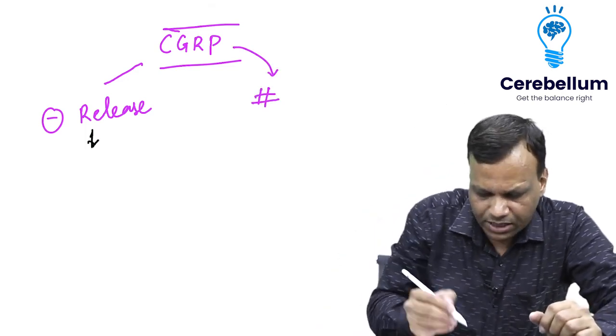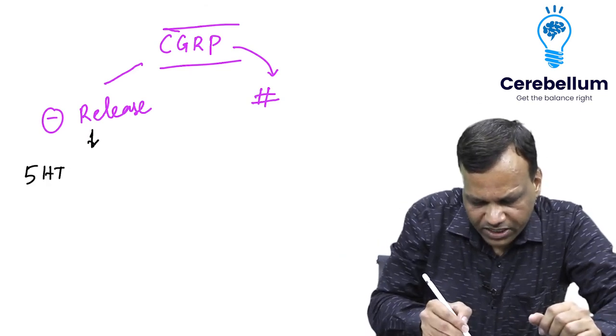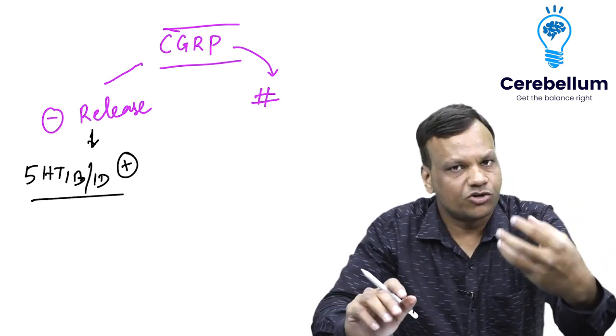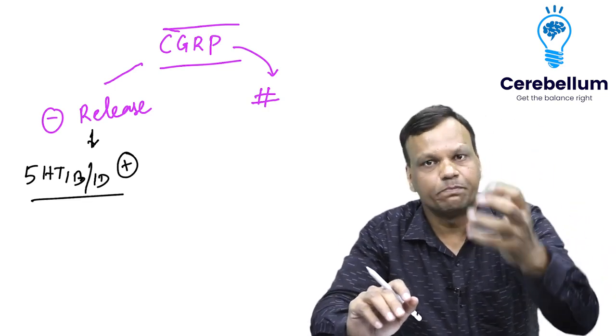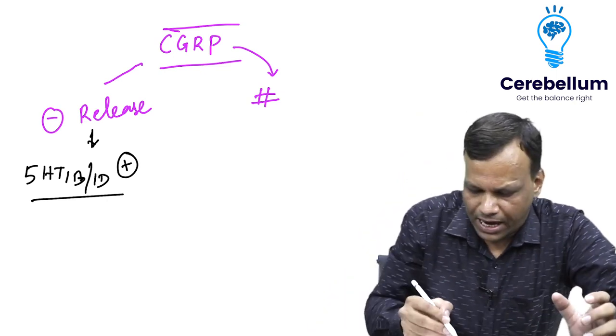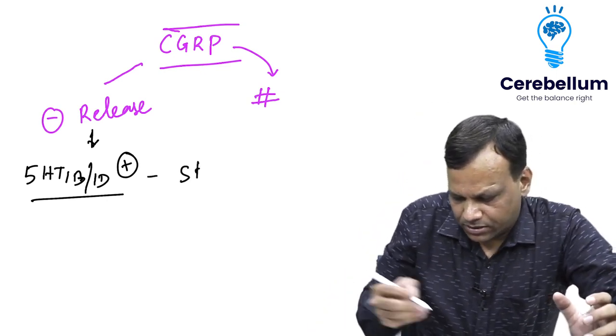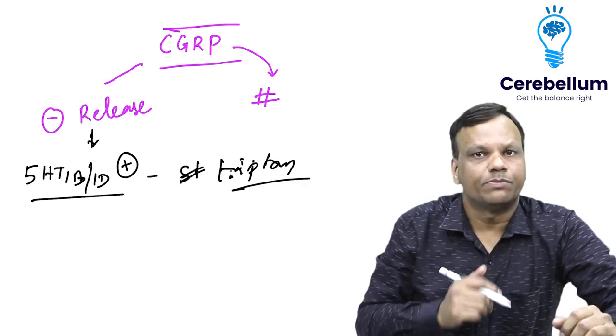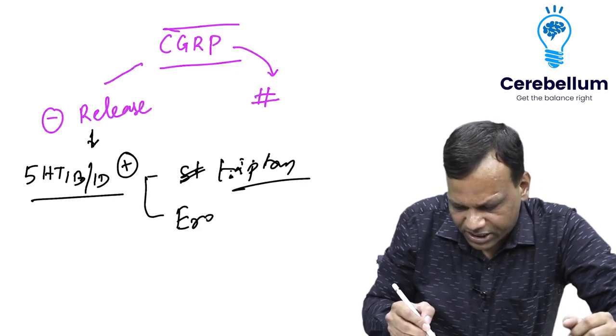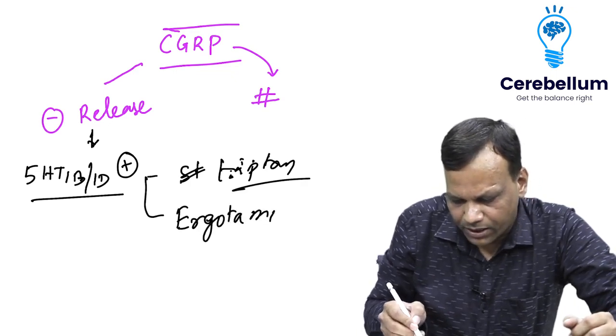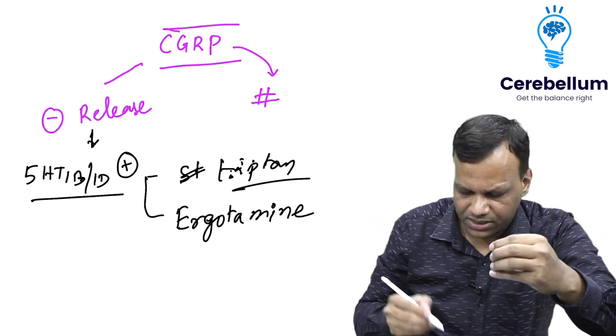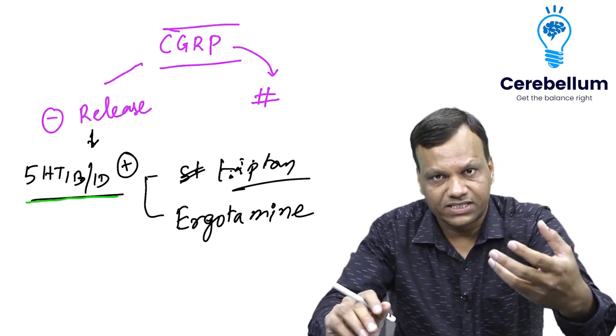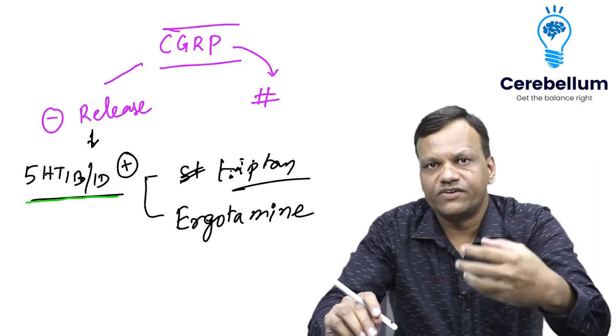Which drugs inhibit release of CGRP? These are 5-HT1B1D agonists. This receptor is present on the trigeminal neuron and acts as a brake. When we stimulate this brake, CGRP does not come, and here the drugs are tryptans. Tryptans like sumatriptan act by stimulating 5-HT1B1D. Another drug doing the same action is ergotamine. They inhibit release but cause additional vasoconstriction because this receptor is also present on blood vessels, which can result in coronary vasospasm.